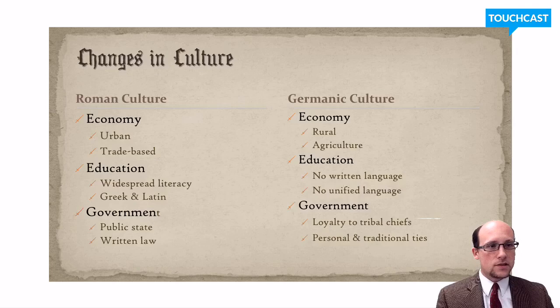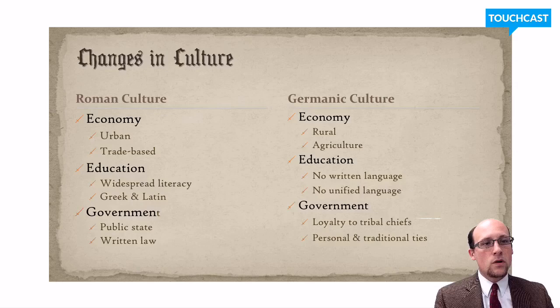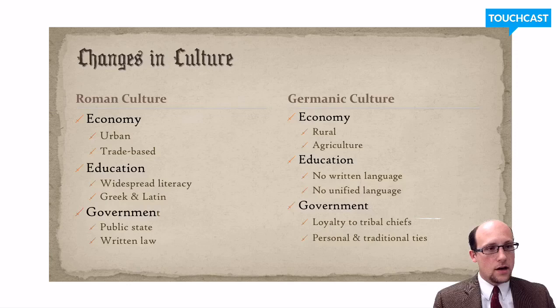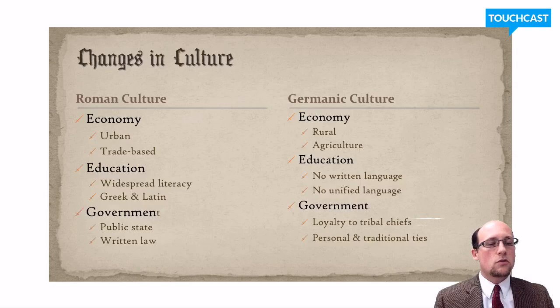Romans were educated. Most Romans, whether in the city or the countryside, could read and write, which was unusual for the ancient world. No matter where you went in the Roman Empire, if you spoke Greek or Latin, you'd be understood. Germanic culture was much more linguistically fragmented. There was no written language — they had to eventually adapt the Latin alphabet. There was also no unified language: you had Gothic, Vandal, Frankish, all these different languages. It was not really an educated society.